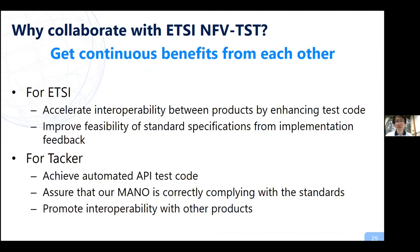Why do we collaborate with TST? Because there are many continuous benefits for each other. For ETSI, improving the tests can accelerate interoperability, which is ETSI's main purpose. Feedback from an implementation perspective will also lead to feasibility of the specification. For TACA, we have a simple reason: we can achieve automated API test code. Additionally, we can strongly declare NFV compliance. If the TACA team creates compliance tests ourselves, they may contain our own understanding, which may be incorrect. So we should use test code created by ETSI NFV. Finally, we share the same purpose as ETSI — promoting interoperability with other products.